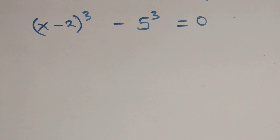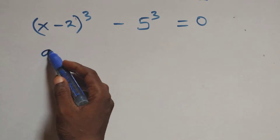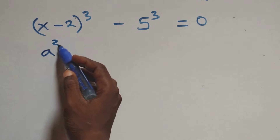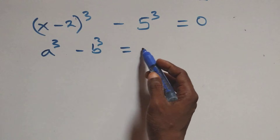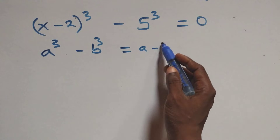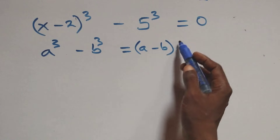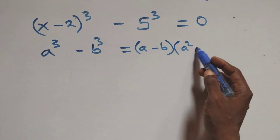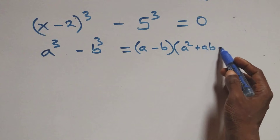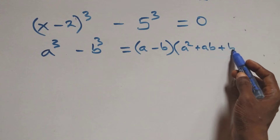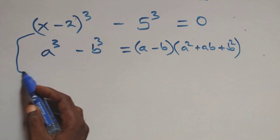Now solving the second case, this follows from a cubed minus b cubed, which factors as (a minus b) times open bracket a squared plus ab plus b squared, close bracket.